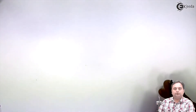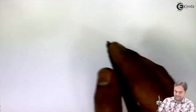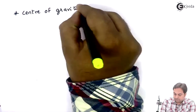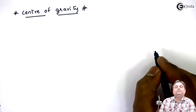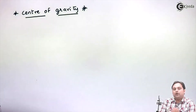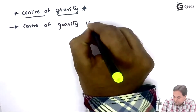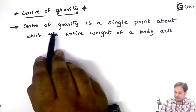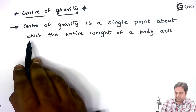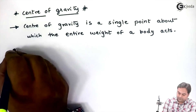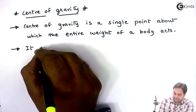Once we have understood the concept of centroid, we would be going on to the center of gravity. The definition of center of gravity is: it is a single point about which the entire weight of the body acts.